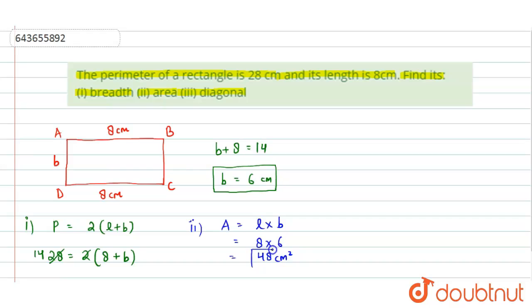This is the area of the rectangle. Now for the third part, we need to find the length of the diagonal. Let us draw one diagonal here.